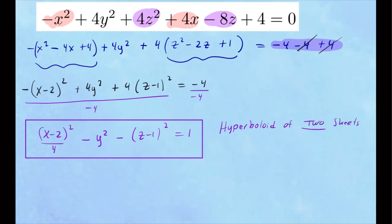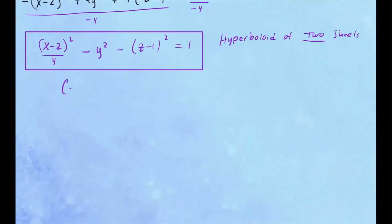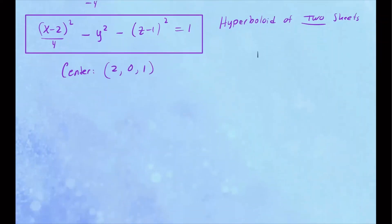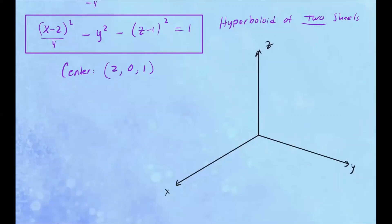The center of this surface is at x equals 2, y equals 0, z equals 1. Let's make a rough sketch in the x, y, z coordinate system. We plot the center first: in the x direction we go 2 units, in y we don't move, and in z we go up 1. So the center is at the point (2, 0, 1).